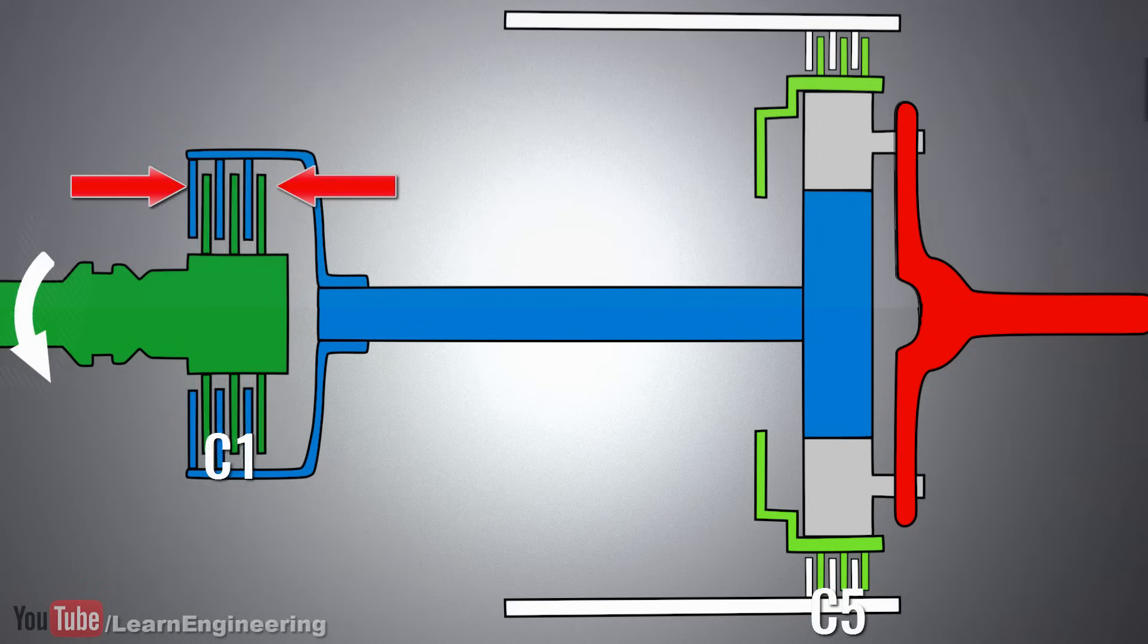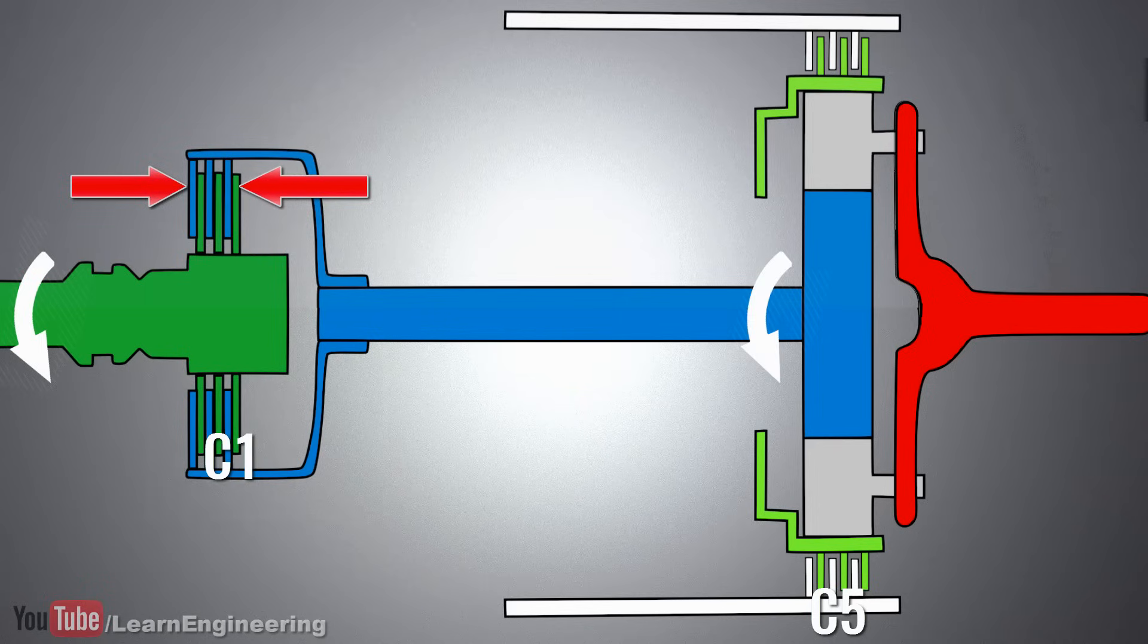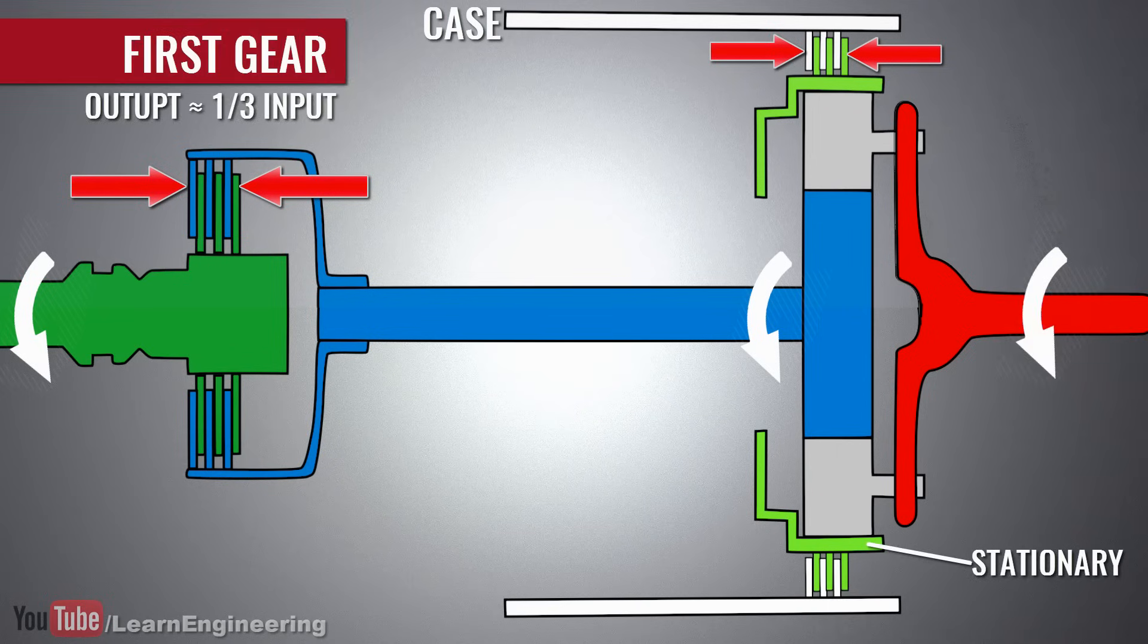If you press clutch C1, the input will be connected to the sun gear. If you press clutch C5, the output ring gear will be stationary. This will result in the first gear.